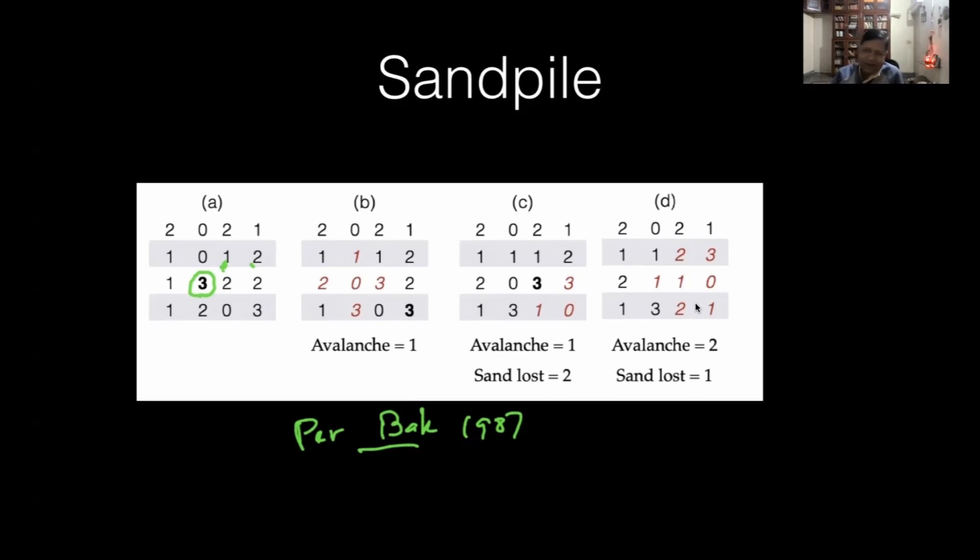So this guy sends one sand each to its four neighbors. Four becomes zero, and you can see the number two has become three, zero has become one, one has become two, and two has become three. These four sands have been distributed to neighbors.